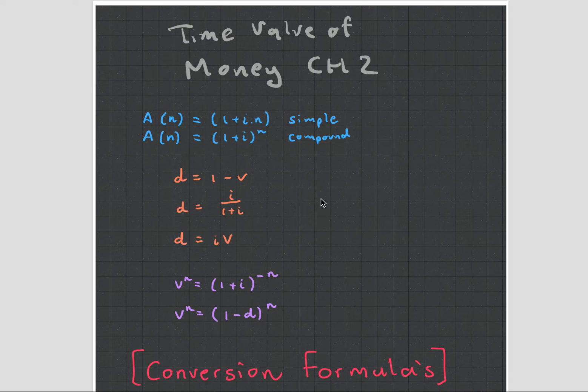The effective rate of discount over a given time period is the amount of interest a single initial investment will earn at the start of the time period, expressed as a proportion of the final amount. Now if that didn't make sense to you, I recommend you go to this website called ActEd.co.uk and purchase their great books called Combined Material Packs.